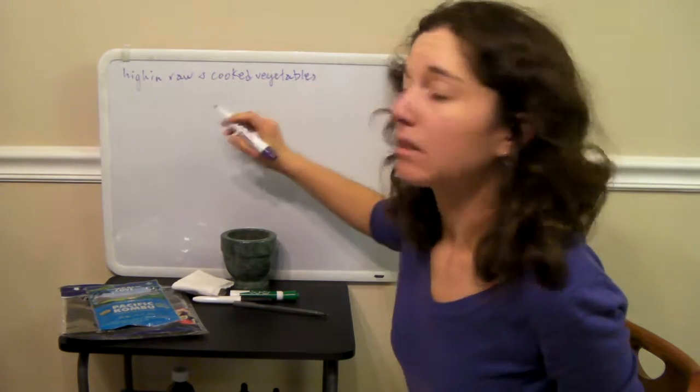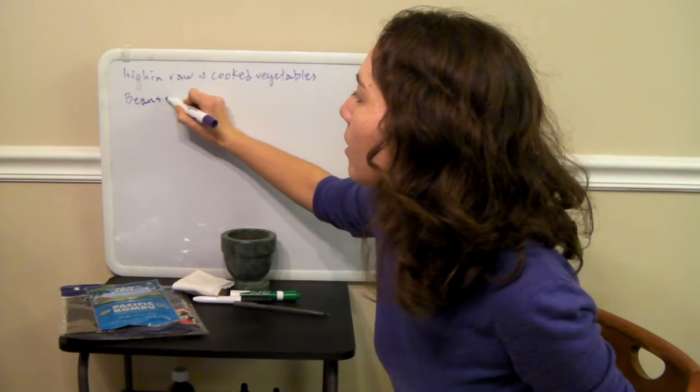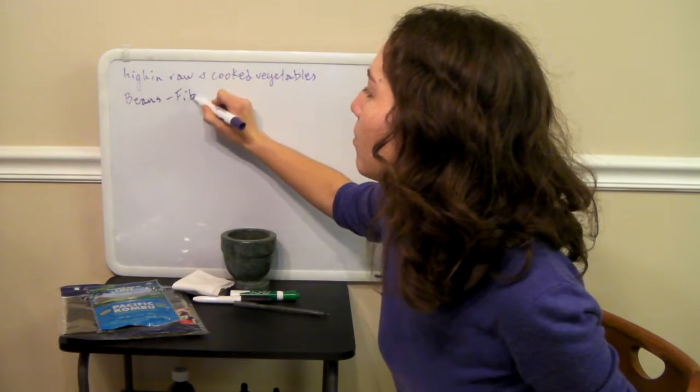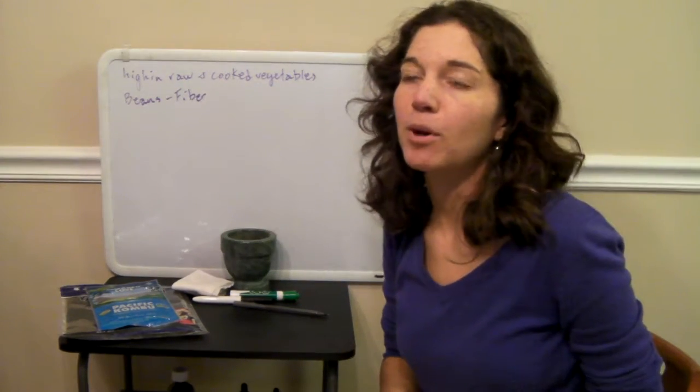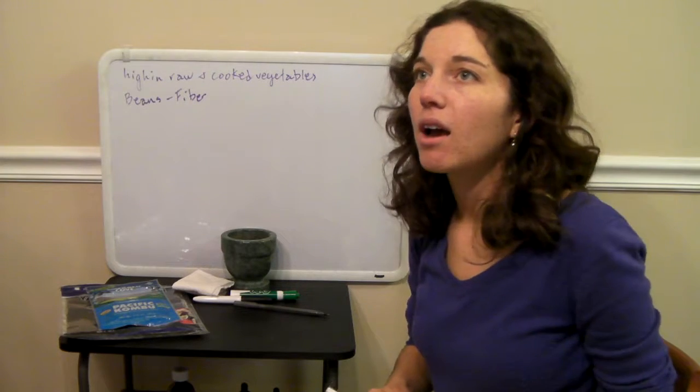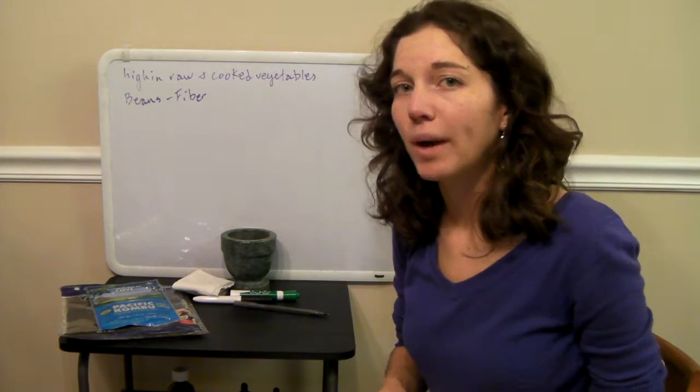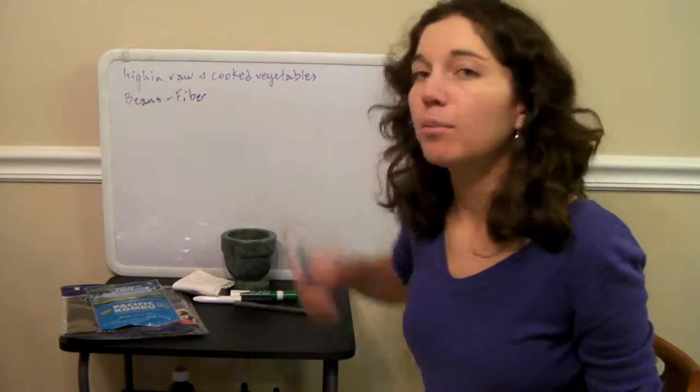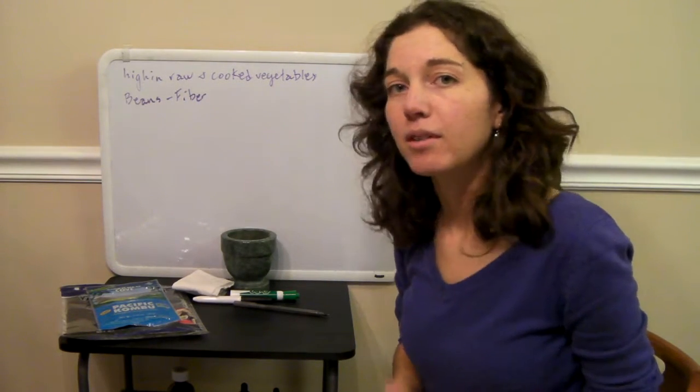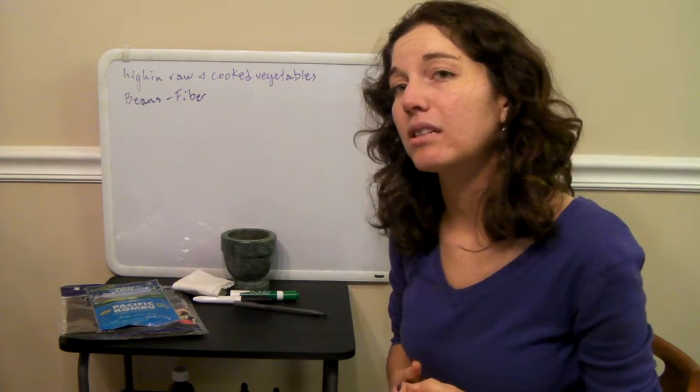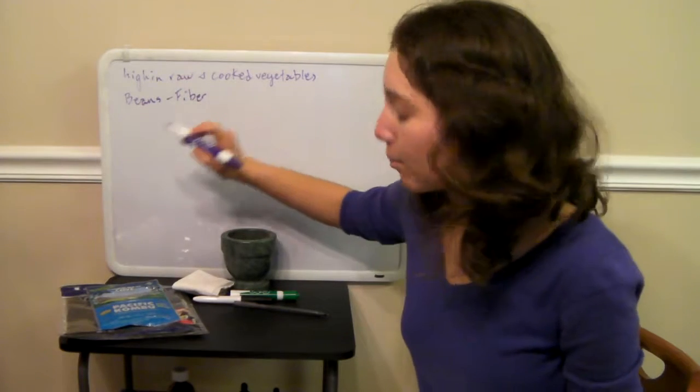It should be high in beans, particularly for the fiber. Beans are a really great source of fiber. Yes, you can get fiber from things like brown rice and quinoa, but a lot of people are actually allergic to these grains. So beans can be a little bit less inflammatory. I usually recommend that people that are sensitive to food start with lentils because lentils are a little bit easier to digest.